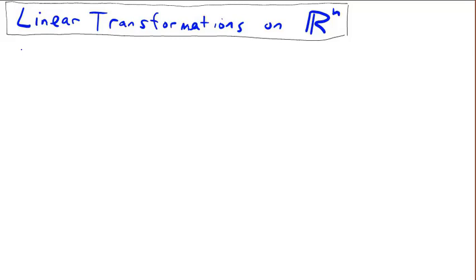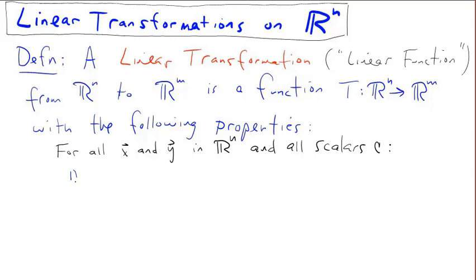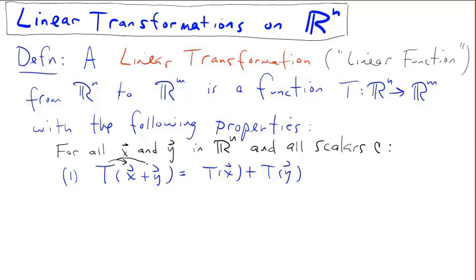In this video, we'll talk about linear transformations on Rn. Much of what we discuss will also apply to linear transformations on a general vector space. A linear transformation, or linear function, from Rn to Rm is a function T with the following properties. For all x and y in Rn and all scalar C: T of x plus y is equal to T of x plus T of y — you can think of this as distributing the T to the x and the y. We'll refer to this property as additivity.